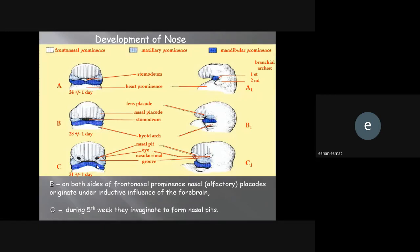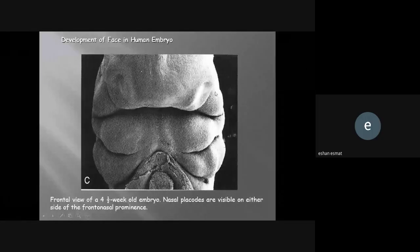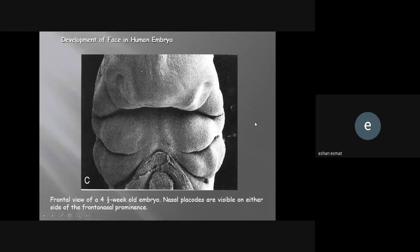During the fifth week, the invagination forms nasal pits. This is development of the face in human embryo, frontal view. The four and a half week old embryo shows formation of the nasal, maxilla, and mandibular structures. Eyes will be here. The frontal nasal process and nasal placodes are visible on either side of the frontal nasal prominence. These nasal structures will start by the time to be fused to become one part.